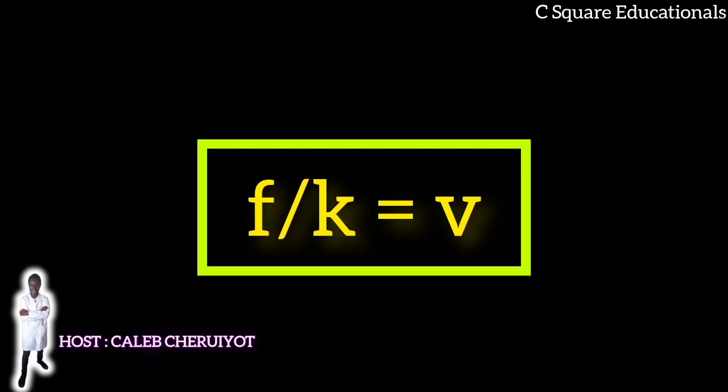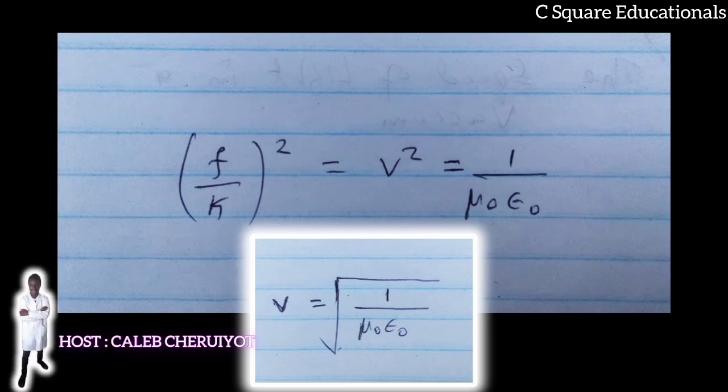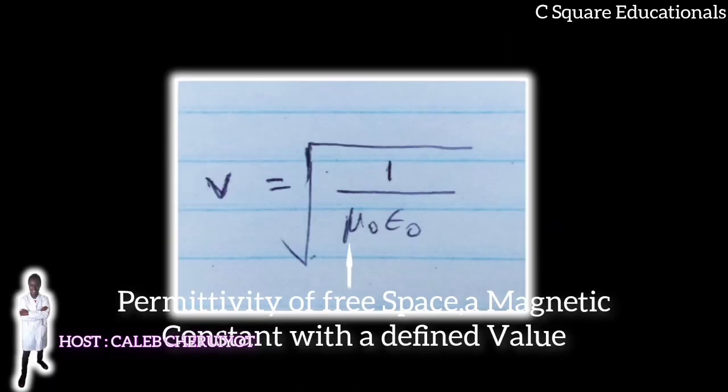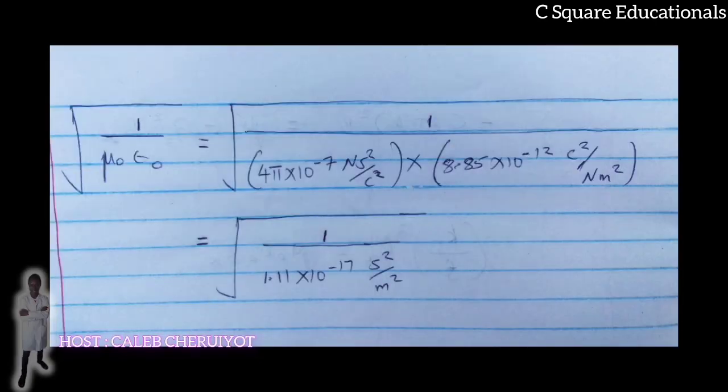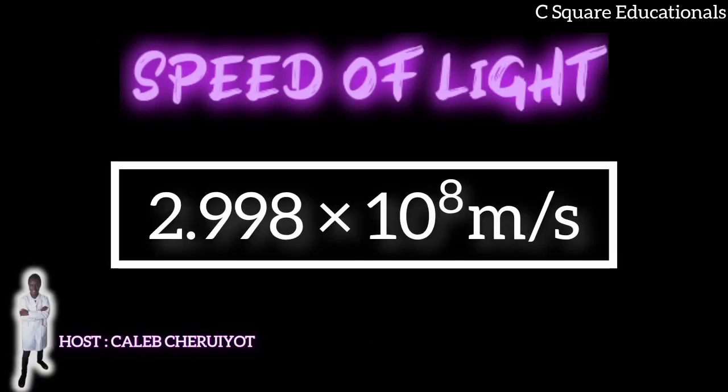And so, letting F on K be equivalent to V, then our equation will be satisfied when F on K squared is equivalent to V squared which is equivalent to 1 over mu naught epsilon naught. Then what is the exact value of V? You know that mu naught is the permeability of free space, a magnetic constant with a defined value. And epsilon naught is the dielectric permittivity of free space, and it too has a determined value. And so, we are able to find the value of V, and we find it to be 2.998 times 10 to the 8 meters per second. Which is what? Which is the speed of light. This is the solution to Maxwell's equations.